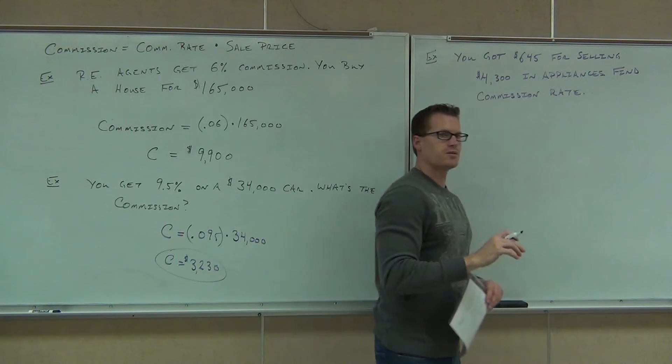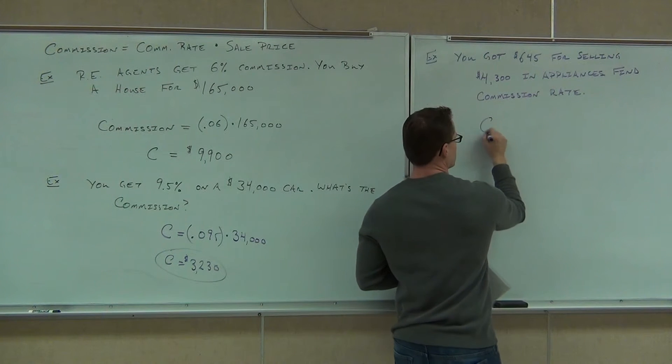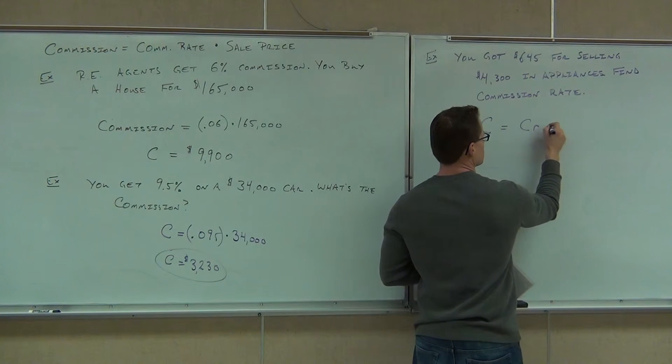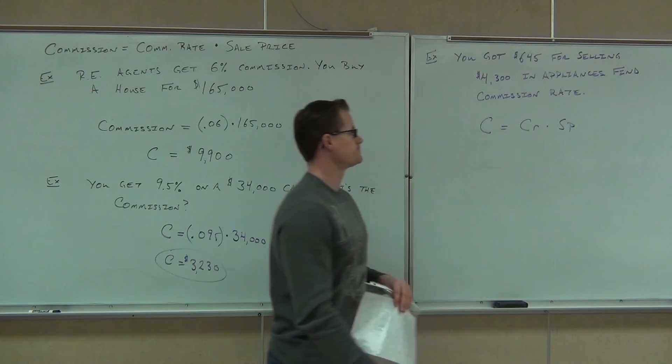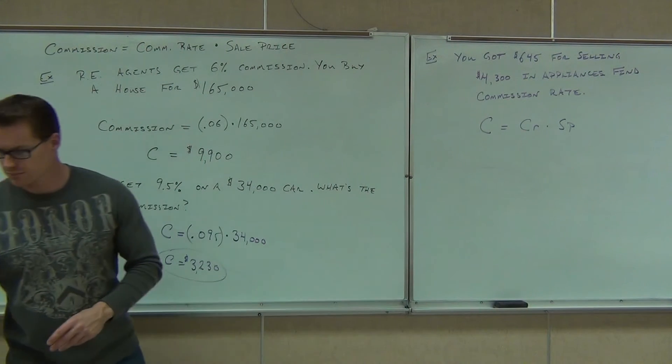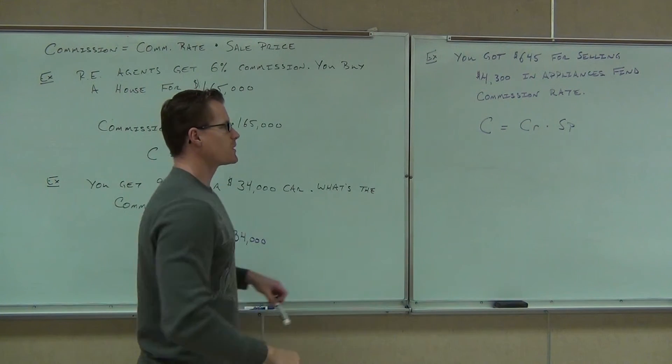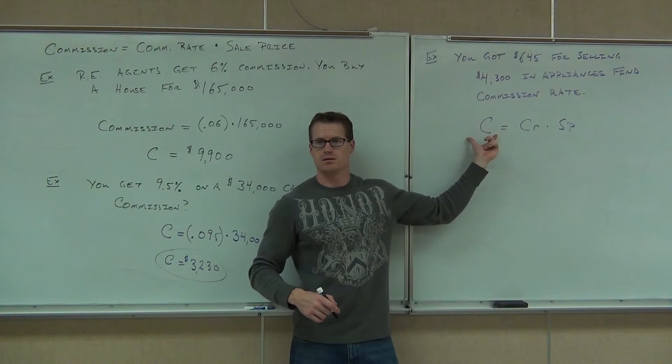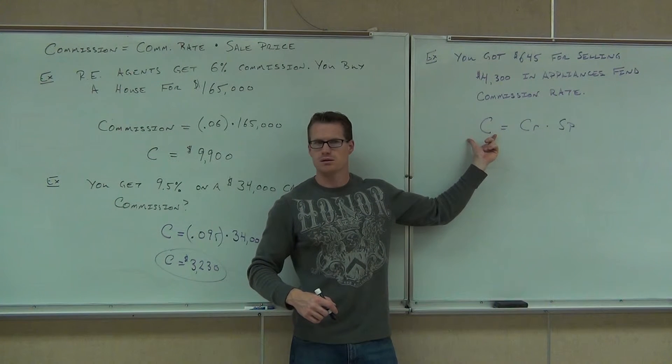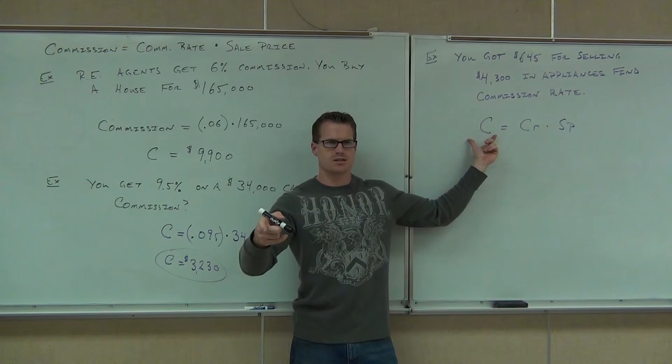What we want to know is the commission rate, so I want you to find the commission rate. Now, there's only one formula I've given you that deals with commission. It was this one right there. It says commission equals commission rate times the sale price. Hey, let's see if we can figure this one out together. Which ones do you know? Do you know the C? Yes. What's the C? $645. Great. Yeah, that's your commission.